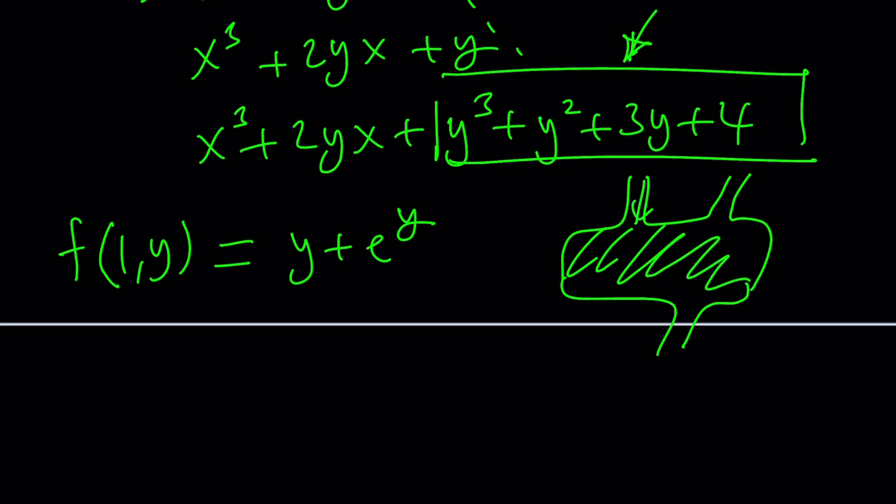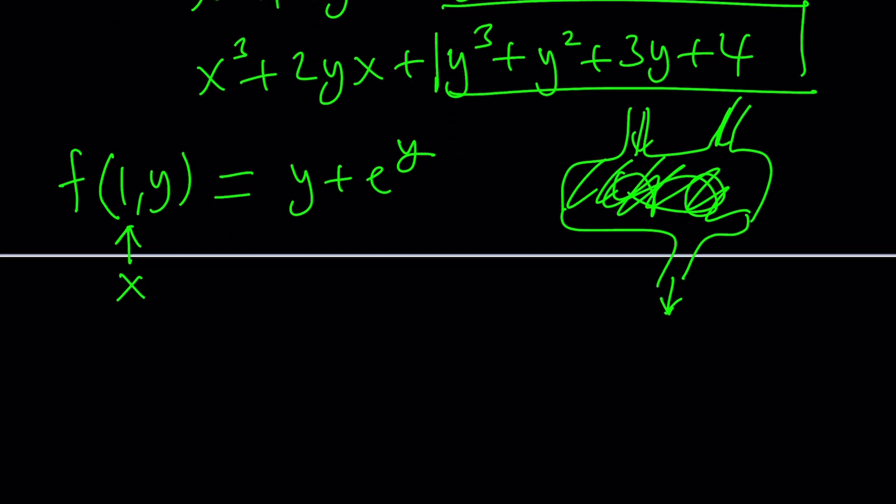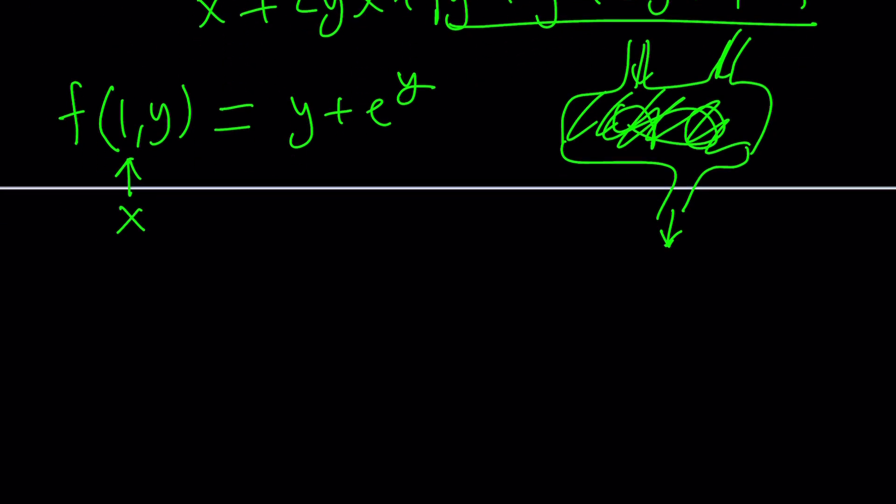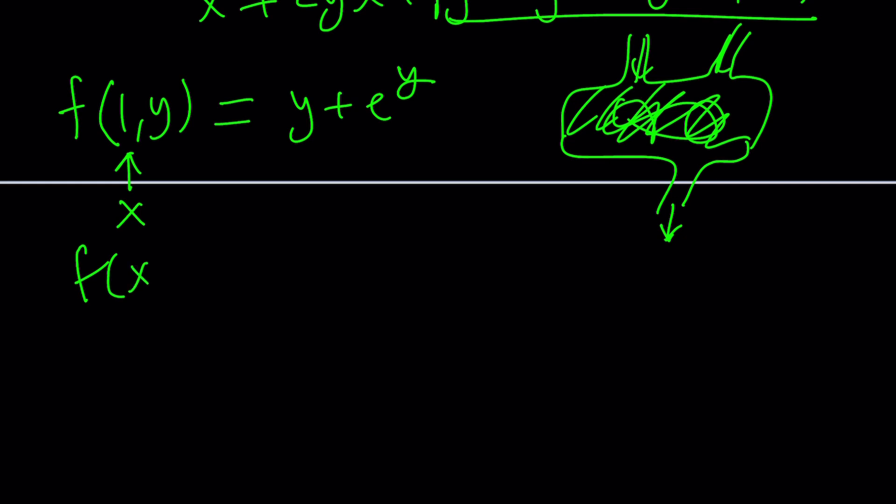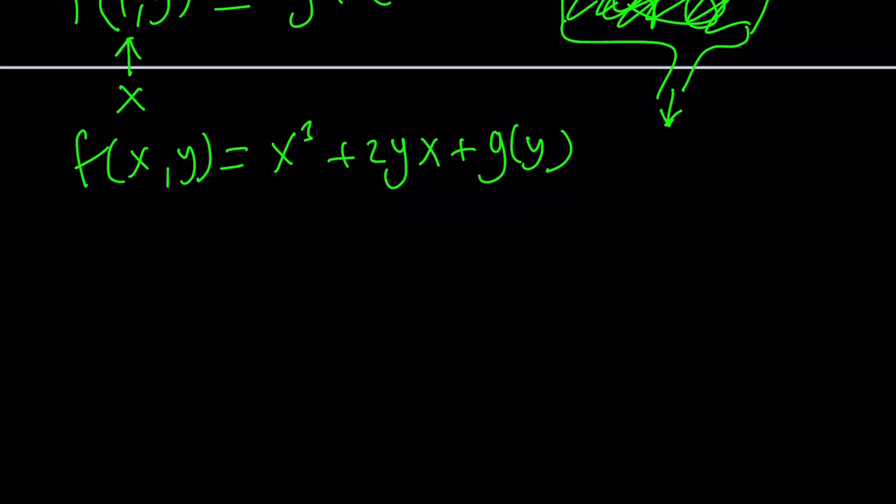So our function machine looks like this - we'll have a single output, right? So you input x and y, our function works, and then you get an output, spits it out. So this means that x is 1, because it's normally f(x, y). But now we replace x with 1. So that gave us f(1, y), or it was given.